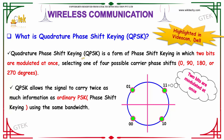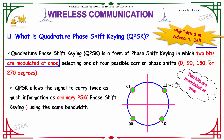Quadrature phase shift keying, or QPSK, is a form of phase shift keying in which two bits are modulated at once, selecting one of four possible carrier phase shifts — which are 0, 90, 180, and 270 degrees.